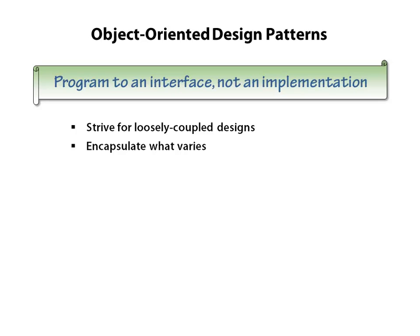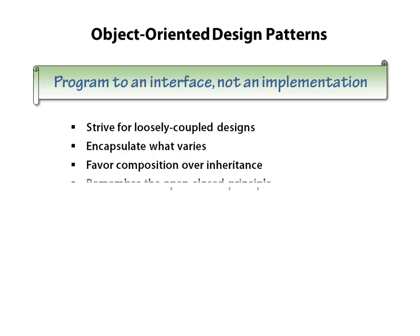Our job is to identify and distinguish between the elements of an architecture that will remain constant and those that will change. By programming to an interface, we can favor composition over inheritance. This helps to adhere to the open-closed principle of designing classes that are open to extension yet closed for modification, encapsulating what varies in order to minimize unnecessary modifications to core components down the road.